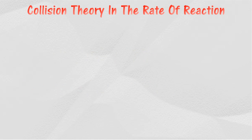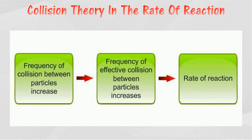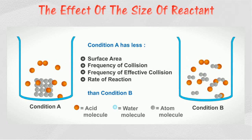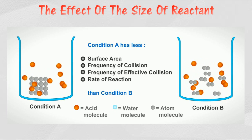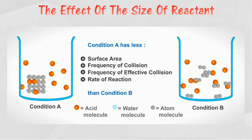Uses of collision theory to explain the rate of reaction: an increase in frequency of collision will increase the frequency of effective collision, thus the rate of reaction becomes higher. If the size of a reactant is smaller, the total surface area exposed to collision between particles will be larger. The frequency of collision between particles will increase, and the frequency of effective collision that has activation energy will also increase; therefore the rate of reaction increases.